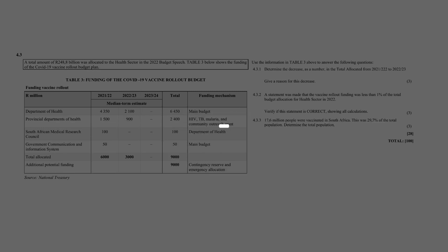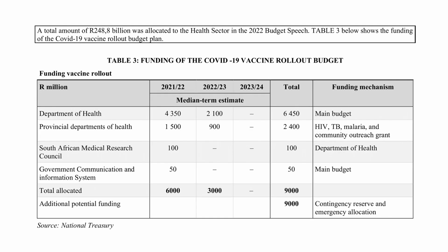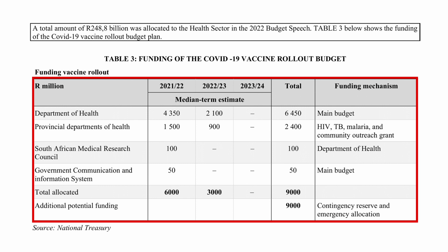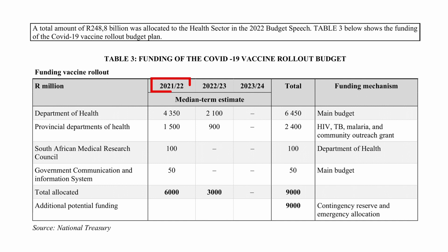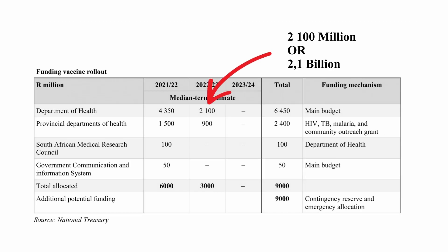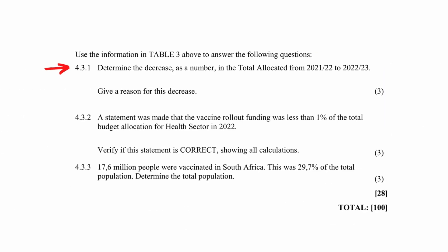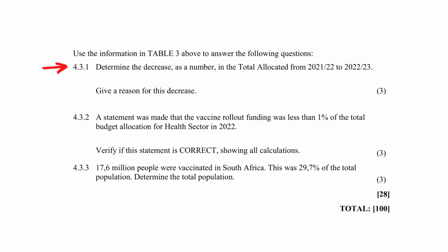Let's take a look at this question in detail. You are given the information that the total amount of 248.8 billion rand was allocated to the health sector in 2022. You are also given a table showing the funding of the COVID-19 vaccine rollout budget for the 2021 and 2022 financial year. The values in the table are in millions of rands.